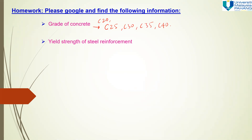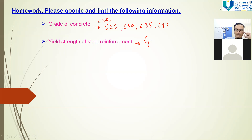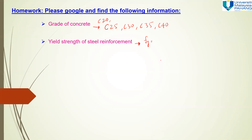What is the yield strength of steel reinforcement? Anybody know? The yield strength available for design and construction — we label this as FY. The values available are 250 Newton per millimeter square, 460 Newton per millimeter square, and 500 Newton per millimeter square.